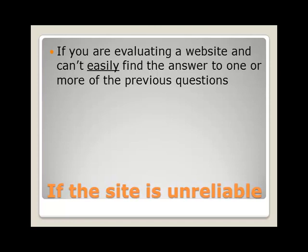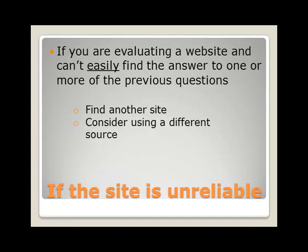If you're evaluating a website and you can't easily find the answer to one or more of these questions, the site is probably not your best source of information. There are a couple things you can try next. Try using different search terms to find a site. If you're researching the harmful effects of drug use, instead of searching 'drug use,' which might bring up websites related to religious, recreational, or medical drug use, try searching 'drug abuse.' Sometimes the internet is not the best place to find certain types of information. A book, an encyclopedia, or a journal article might be better suited to your topic. Searching the web for information about the cultural history of tattooing might only bring up tattoo shops in your neighborhood. A better, more reliable resource might be a reference book on the history of tattooing. If you get stuck, always remember that you can ask a librarian for help.